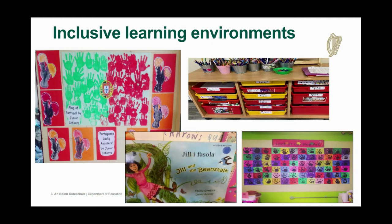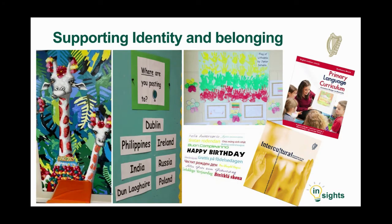We will now consider how classroom displays and resources can really support the children's sense of identity and belonging. In high-quality early learning and care settings, practitioners use photographic and visual displays such as 'All About Me' and 'Family Walls' to celebrate the children's identity. These displays can also celebrate the people who have special significance for them, including their pets, as well as the children's efforts and achievements. Such displays prompt the children's natural curiosity about similarities and differences in family structure. These approaches are often replicated in primary schooling.